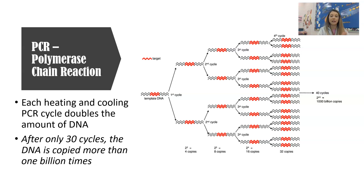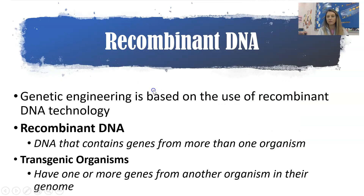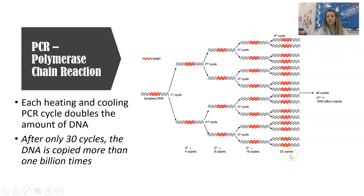Every heating and cooling cycle doubles the amount of DNA. In just 30 heating and cooling cycles, DNA has been copied more than 1 billion times — it's exponential growth because it's doubling every time. You can see how in just a couple of cycles, we go from one fragment of DNA to all of these fragments that have been copied over and over.